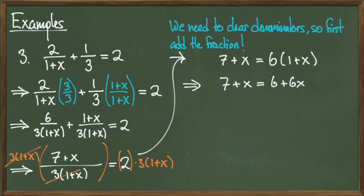Once I distribute the 6 on the right-hand side, I have a linear equation. So to solve for x, I can subtract 6 from both sides, and I can subtract x from both sides. This gives me a revised equation of 1 equals 6x. So I divide both sides by 5 to get a solution of x equals 1 fifth.